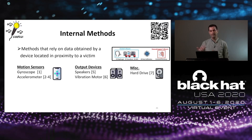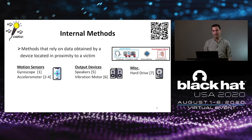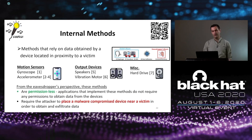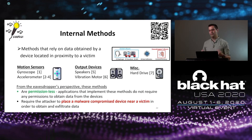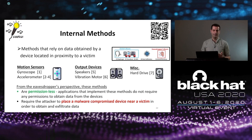Internal methods include motion sensors, speakers, and vibration motors integrated into smartphones, as well as magnetic hard drives — data from all of these can be used to eavesdrop on sound. The greatest advantage of internal methods from an eavesdropper's perspective is that they are permissionless, meaning applications implementing these methods do not require any special permissions. However, the greatest disadvantage is that they require the attacker to compromise a device with malware in order to obtain and export the data.